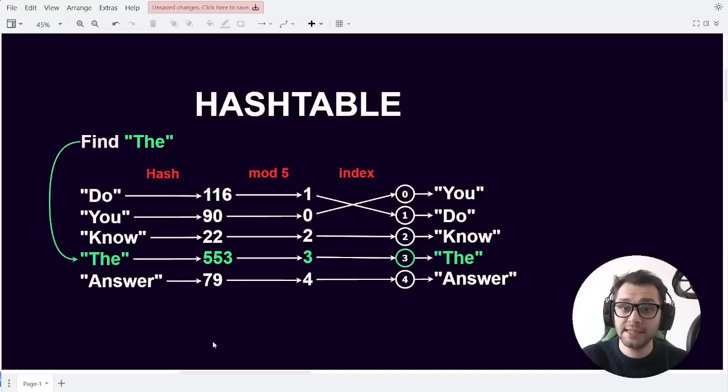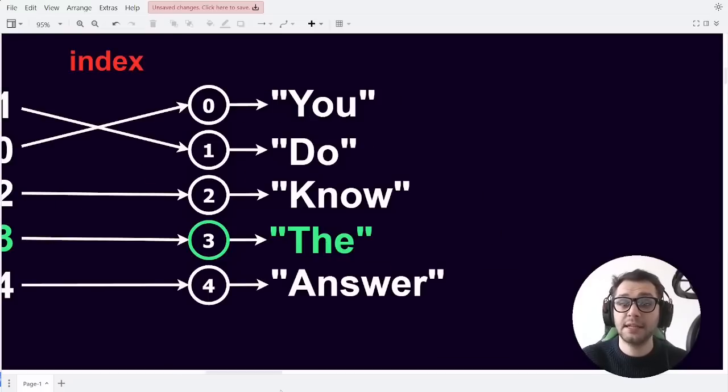In a hash table things work slightly differently. The items are still stored in the list but they're not placed according to the order in which they were inserted in the list. Instead they are placed at an index which is based on the hash of the value.